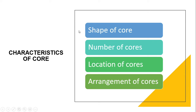Characteristics of the core include: the shape — how the core looks, which can be rectangular, triangular, circular or oval; the number of cores — if there is more than one core present within a building; the location of cores — whether centralized, decentralized, or off-centered; and the arrangement of cores — how multiple cores are arranged within a building.